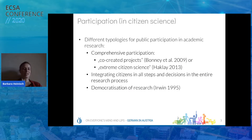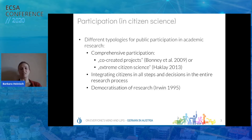When we talk about participation in citizen science in academia, it can take many forms. Different typologies for members of the public who participate in academic research have been proposed. Often-cited typologies are those by Bonnie et al. and Hackley, who define different levels of participation. The most comprehensive form of public participation is called either extreme citizen science or co-created projects. Co-creation aims at integrating citizens in all steps and decisions in the entire research process, playing an important role in the democratization of research.